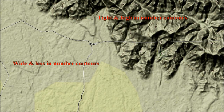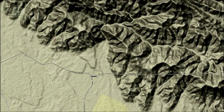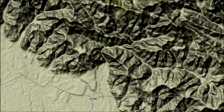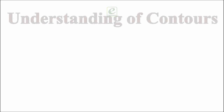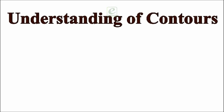To identify various relief features, one should carefully check the presence or absence of contours and their layout. If the contours are larger in number and are closer together, it shows that the area is highland or a mountain area, where the value of the contours exceeds 1000 meters.